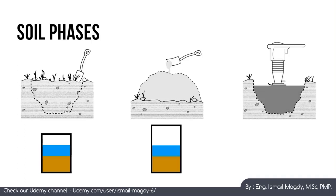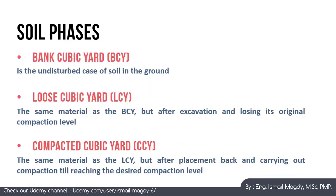Now, if we start backfilling using the same soil and proceed with compaction, the soil will be compacted to a smaller volume than the original, because compaction reduces the air content to its minimum. The soil volume in the first condition is what we call a bank cubic yard, in the second condition a loose cubic yard, and the third condition a compacted cubic yard.